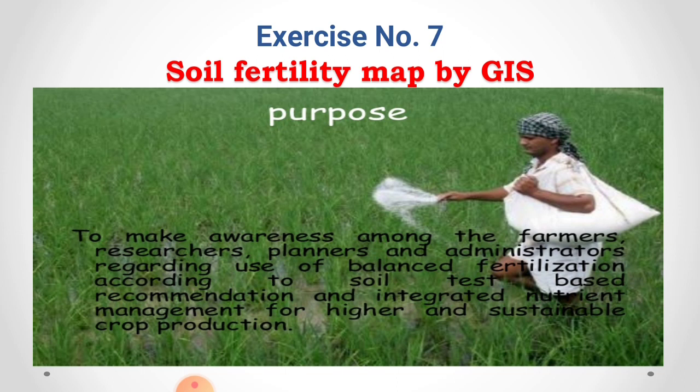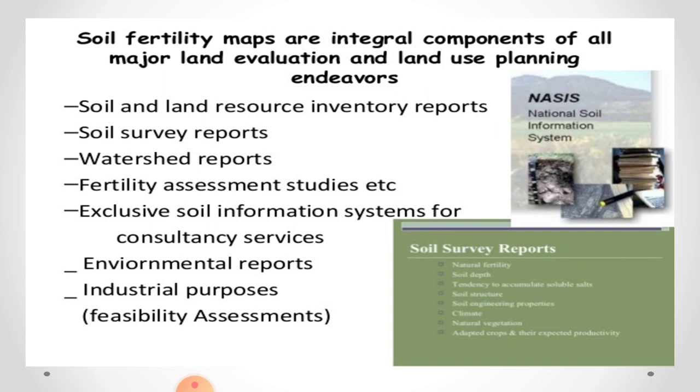First, let's look at exercise number seven: Soil Fertility Map by GIS. GIS means Geo-Information System, also called Geographical Information System. The purpose of a soil fertility map is to make awareness among farmers, researchers, planners, and administrators regarding the balanced use of fertilizers and integrated nutrient management in crops for higher and sustainable crop production.